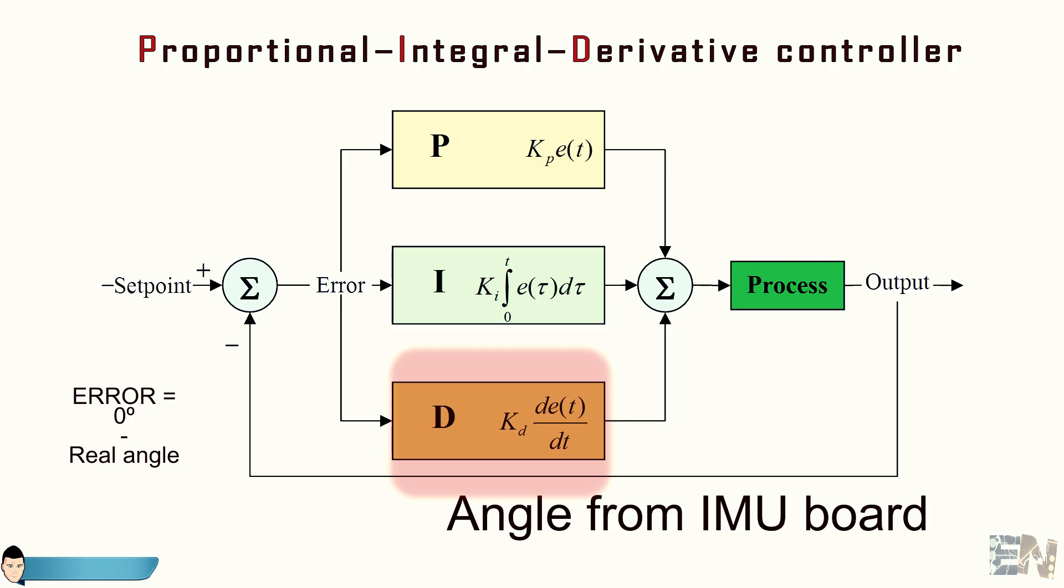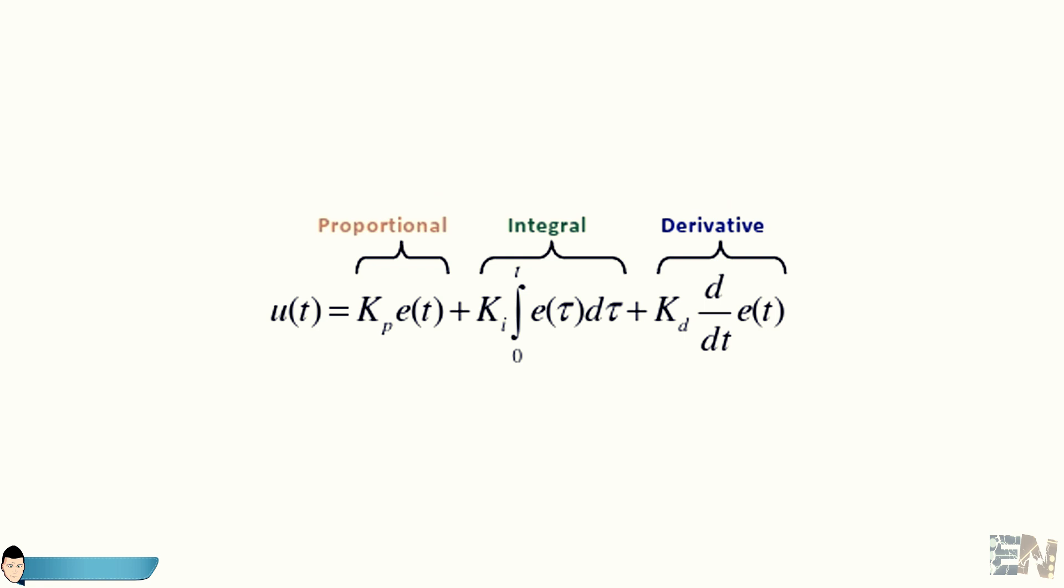The total output of the PID control is the sum of these three parts: proportional, integral and derivative. This is the full formula of the PID control.